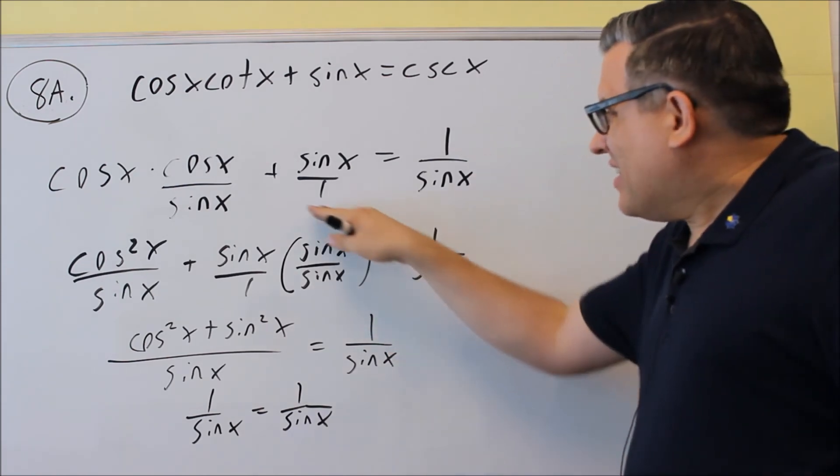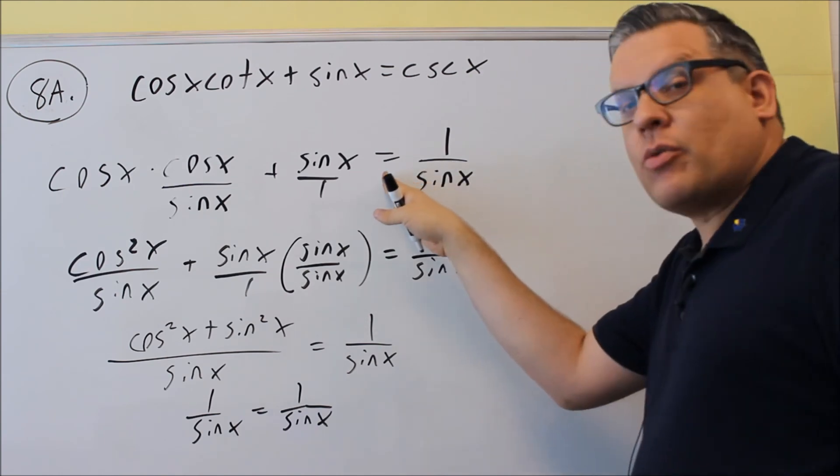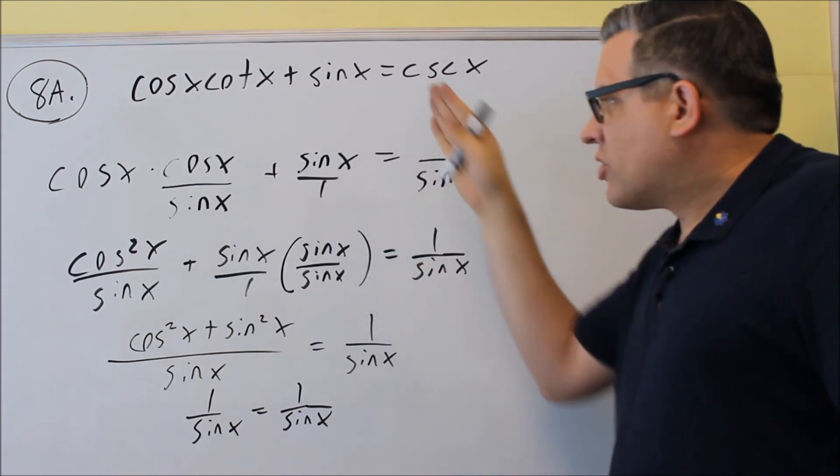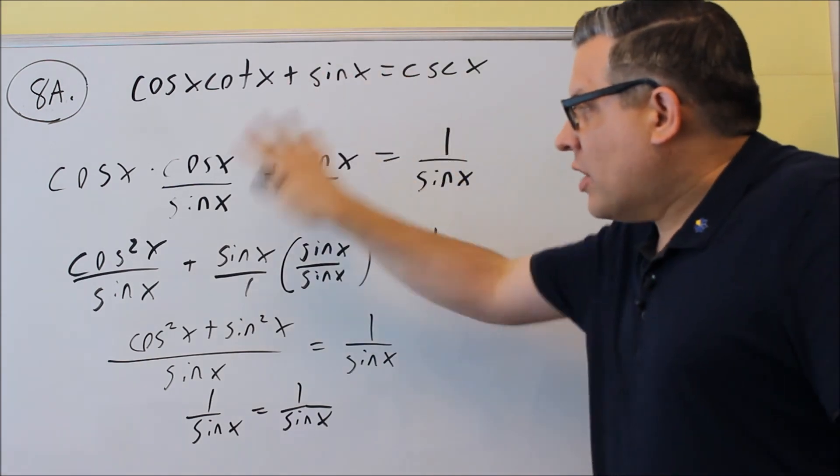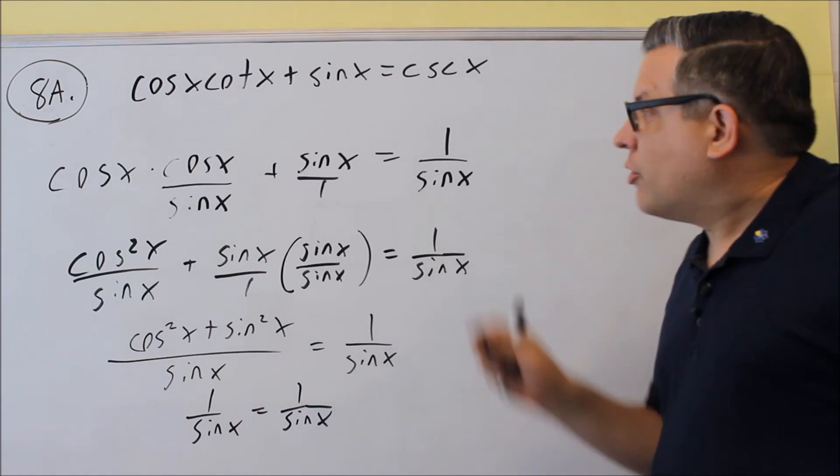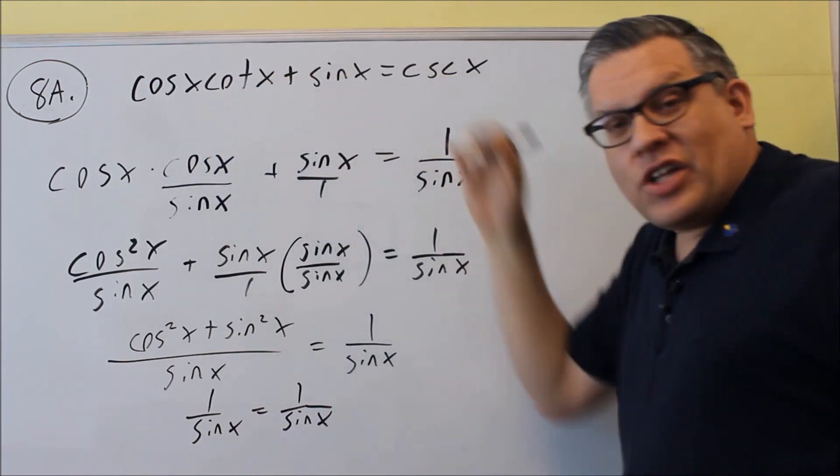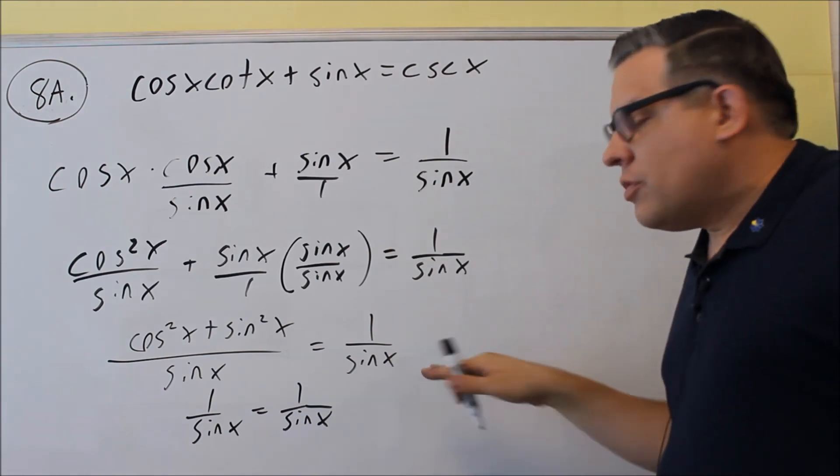You never want to add something over the other side or cross anything over. You don't want to do anything with the equal sign. You're going to treat both sides as two separate problems. So you work one side all the way down. And sometimes you may have to work the other side until both sides are equal. In this case, we're able to do the majority of our work all on the left-hand side. And we ended up with two sides equal.